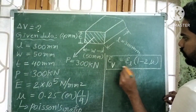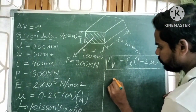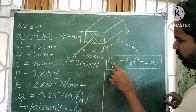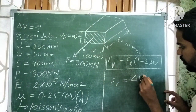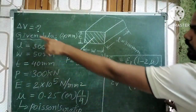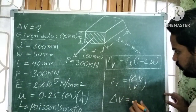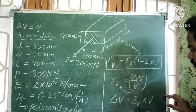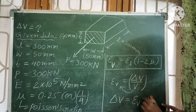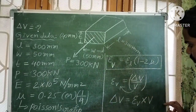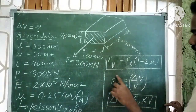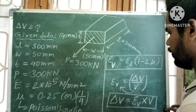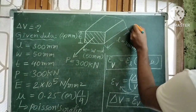We are calculating volumetric strain εᵥ because volumetric strain is equal to change in volume divided by original volume. So change in volume ΔV equals εᵥ into V (original volume). First we find volumetric strain, then from volumetric strain we can find the change in volume.